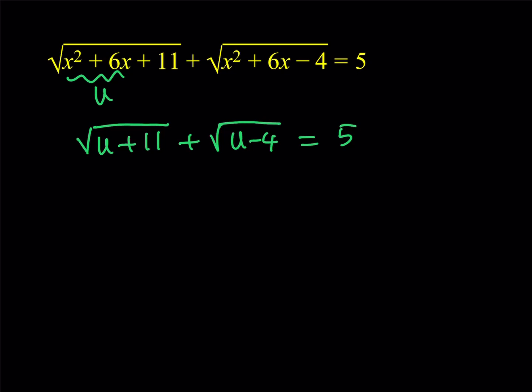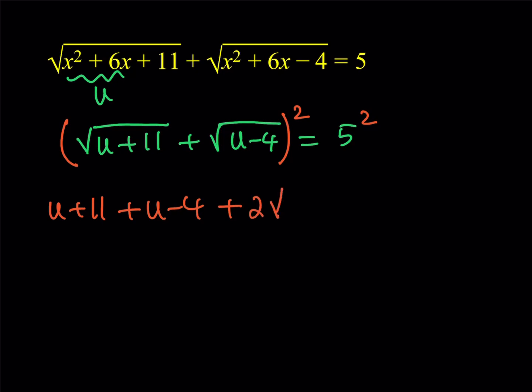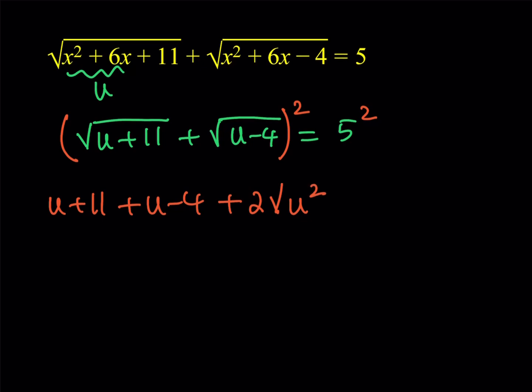The next step is squaring both sides. Should I isolate one radical on each side and then square? My choice is to keep them on the same side and square this way. Squaring gives us: u plus 11, plus u minus 4, plus 2 times the square root of their product. When you multiply the two expressions inside the radicals, it gives you u squared plus 7u minus 44. The right-hand side equals 25.